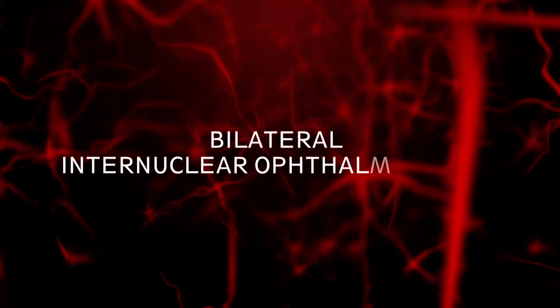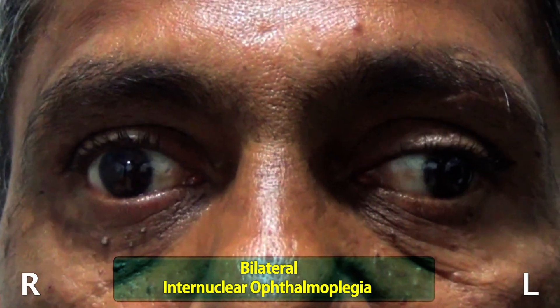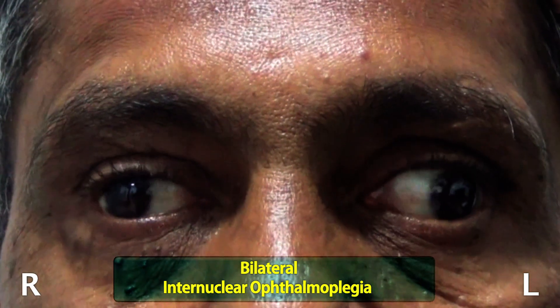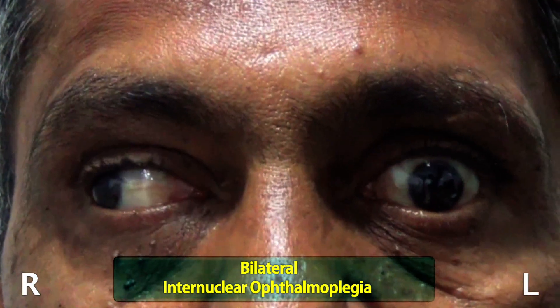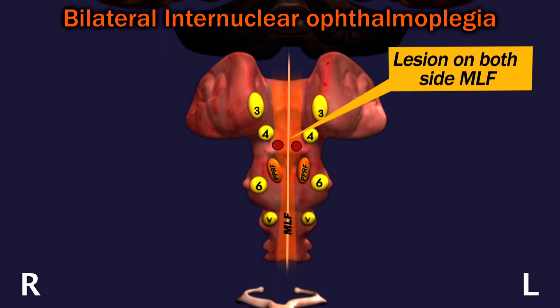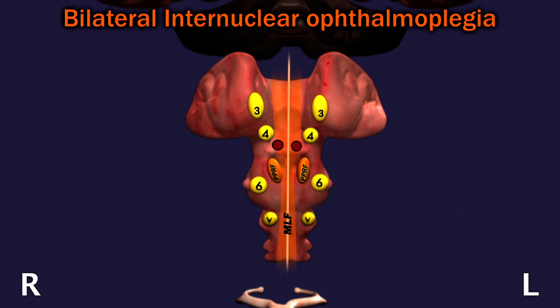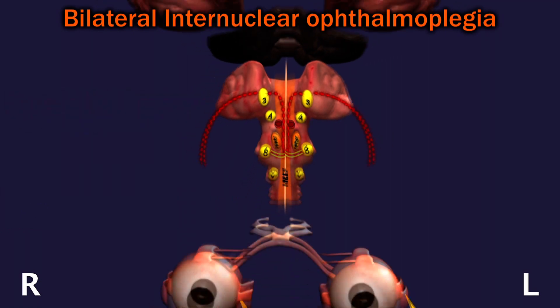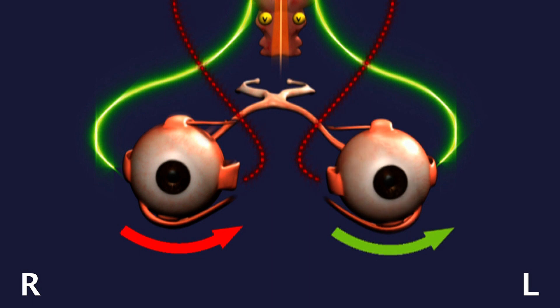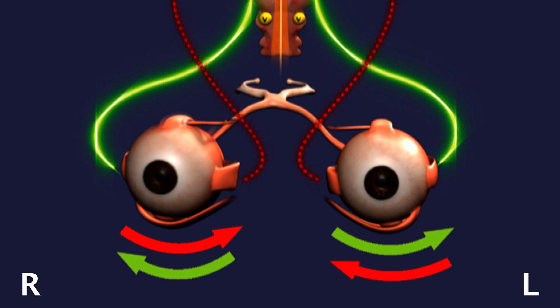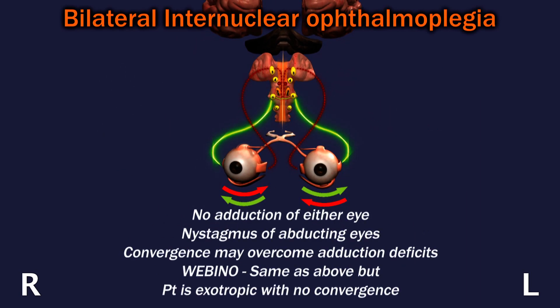Bilateral internuclear ophthalmoplegia: this is a patient with bilateral internuclear ophthalmoplegia. Upon right gaze, the right eye abducts but the left eye does not adduct. Upon left gaze, the left eye abducts and the right eye does not adduct. Medial longitudinal fasciculus lesions on both sides will not send impulses to the third nerve nucleus on both sides, resulting in deficit of adduction in the right eye with nystagmus of the contralateral abducting eye, and deficit of adduction in the left eye with nystagmus of the contralateral abducting eye. Convergence may overcome the adduction deficit.